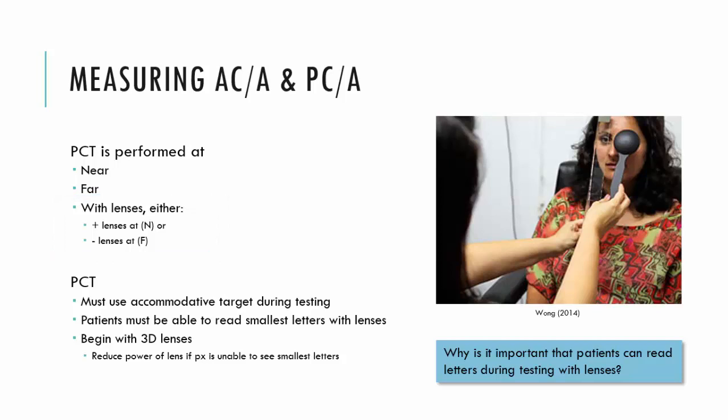An important point related to measuring the ACA and PCR ratio is that you must use an accommodative target during testing and ensure that the patient is able to identify it. If you're using letters, they should be able to identify the letters of that accommodative target. The reason we do this is that we want confidence that the patient is accommodating appropriately for that distance. For example, if at a third of a meter I introduce plus three lenses to relax accommodation by three diopters, I need proof that the patient has indeed relaxed their accommodation by three diopters.